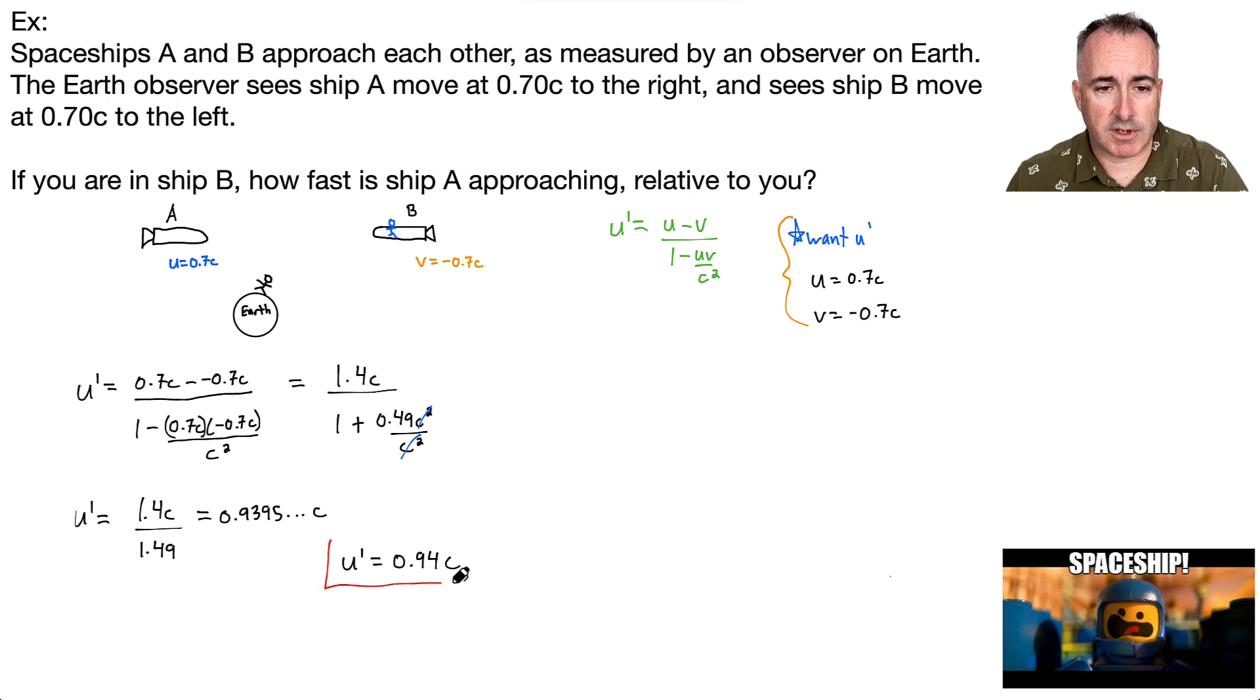So that means there's my final answer here, and what this really means, what's the meaning of this? It tells me that, hey, if I'm sitting in ship B, I'm going to see ship A coming towards me at 0.94 the speed of light. Do you notice I haven't broken the speed of light limit that nothing is allowed to go faster than the speed of light. Isn't that cool?